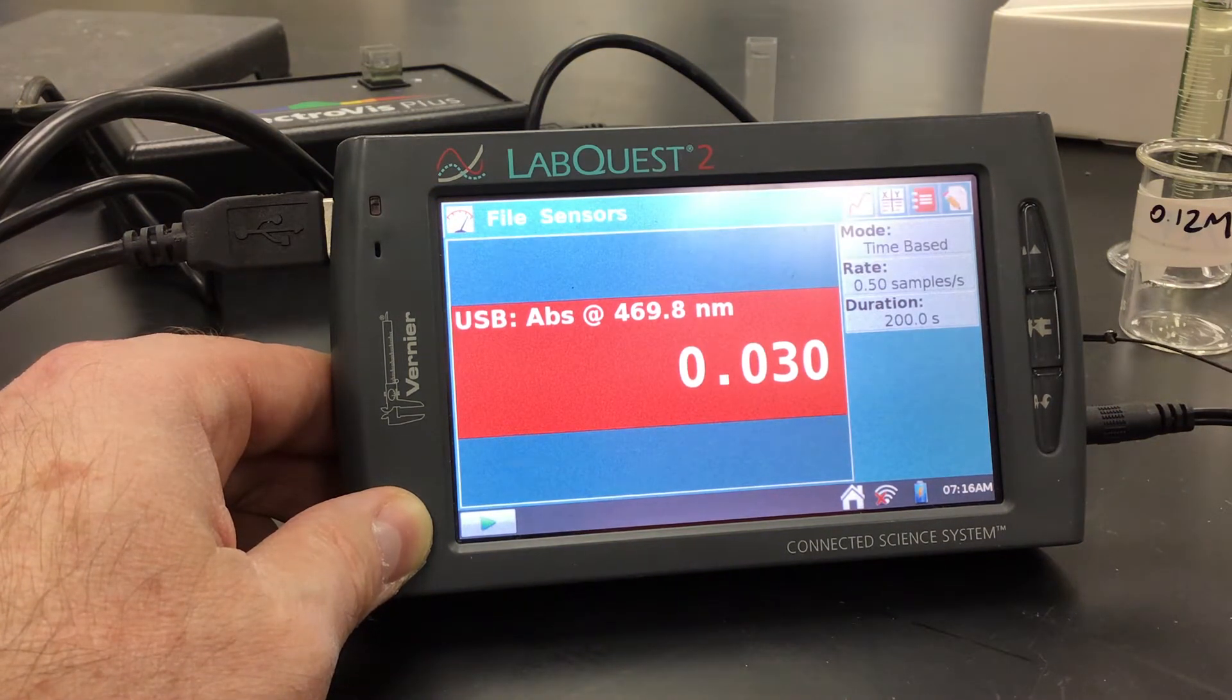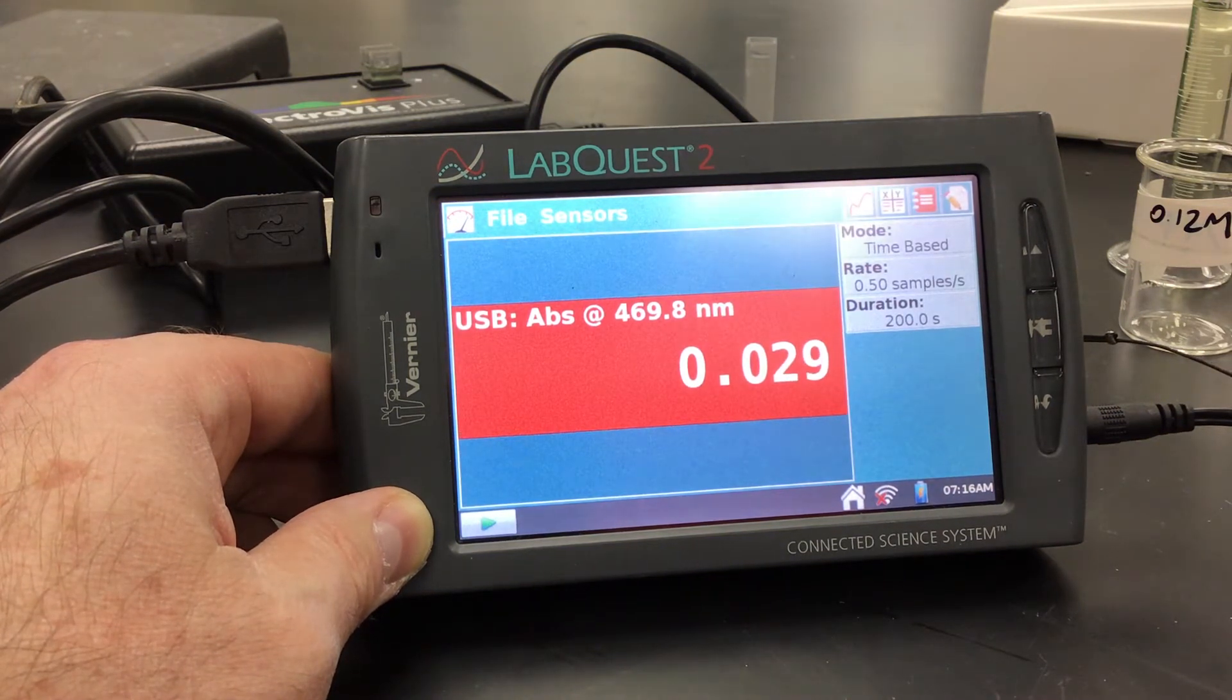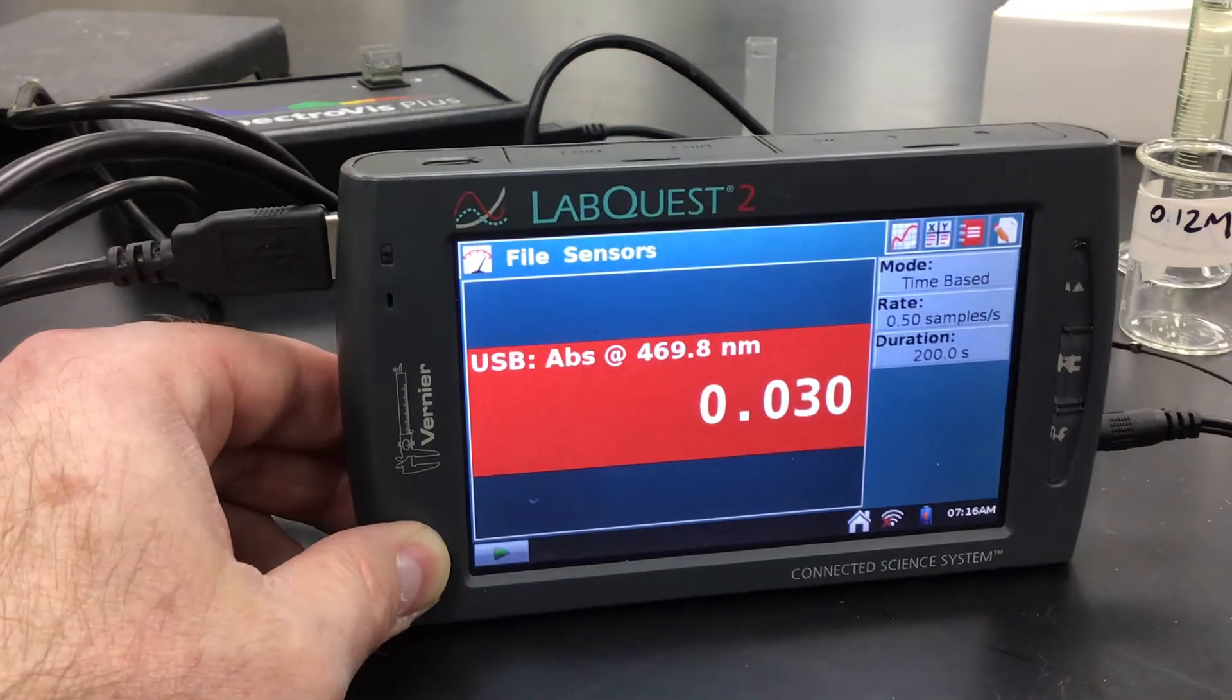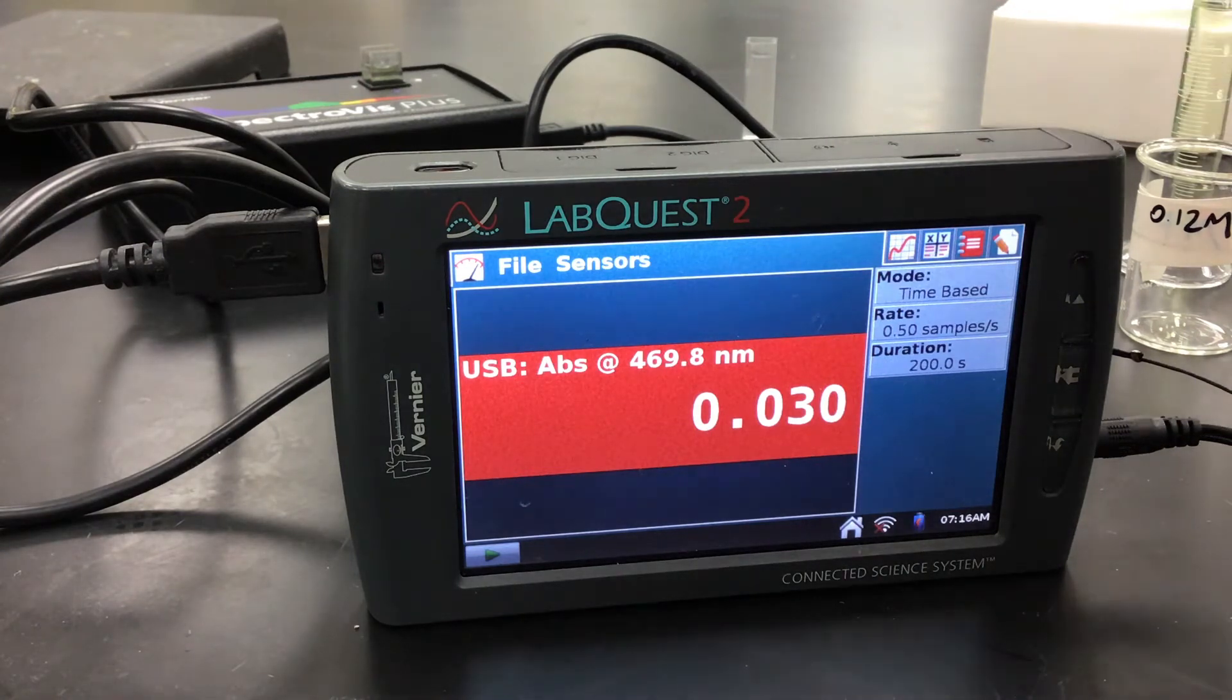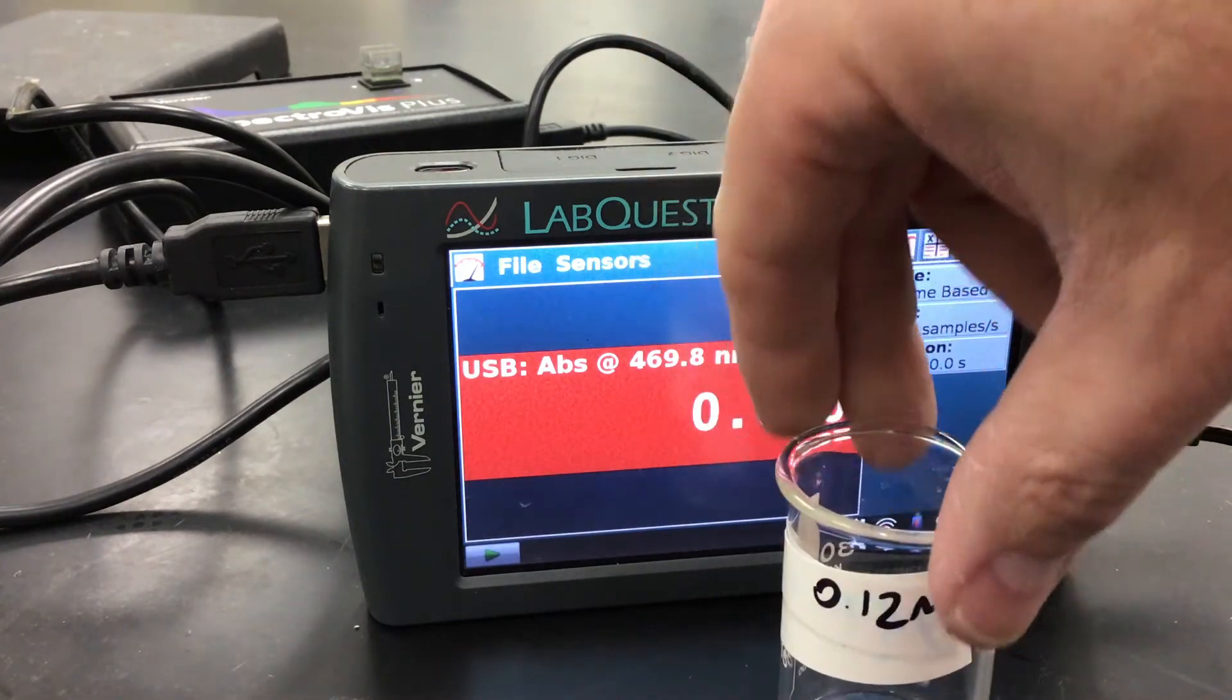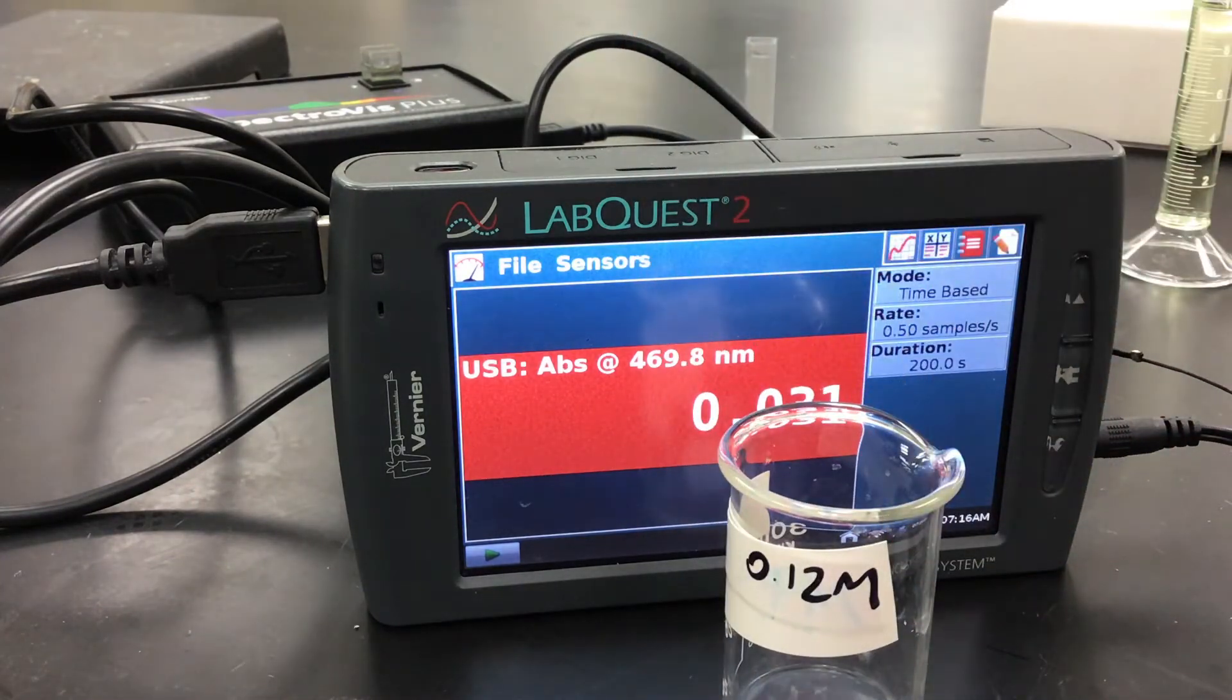All right, so now what we're going to do, we're in time-based mode. What we want to do is that we want to be able to mix our solutions in the quantities that they say. And what I'm going to do is I'm going to mix them in this beaker. And once I mix them, I'm going to make sure I've got a cuvette ready. I'm going to mix them together, pour the solution into the cuvette, and then I'm going to start collecting my data.